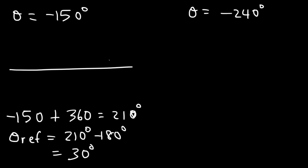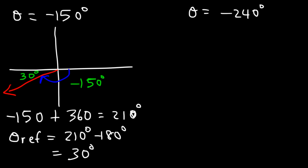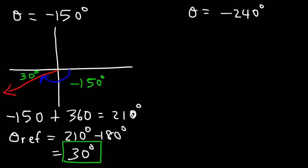Now let's analyze it graphically. Let's draw the angle at negative 150. So this is negative 90, and this will be negative 150. Keep in mind, negative angles require rotation in a clockwise direction. We can clearly see that this angle has to be 30, because a straight angle always adds up to 180. It's always the angle formed between the terminal side and the x-axis.